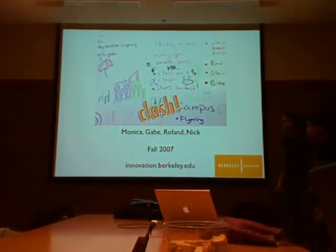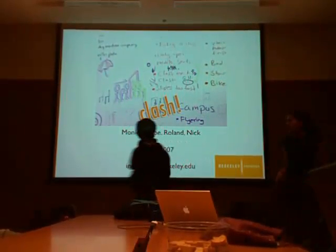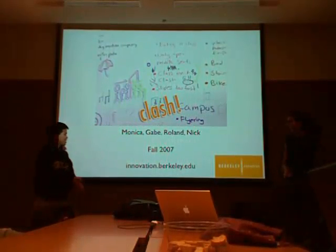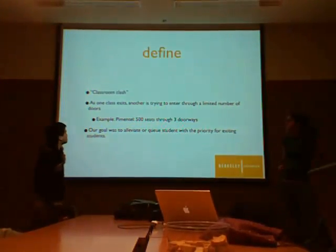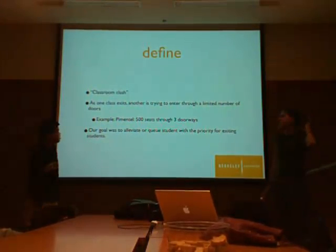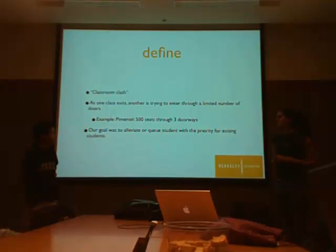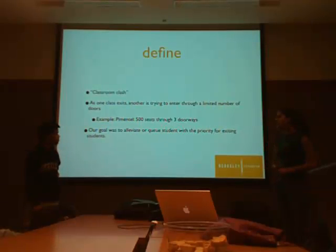We're going to do Clash in the Clash. I'm on the fifth — this is the goal of Gabe and Nicker. So, Clash in the Clash — what is Clash in the Clash? It says one class exits while there's another class trying to enter through a limited number of doors. One example is about 500 seats and there are only three doors to exit through. Our goal was to alleviate or cue students with priority for the exiting students.